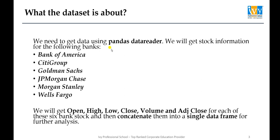Using pandas data reader we will get stock information for six banks: Bank of America, Citigroup, Goldman Sachs, JP Morgan Chase, Morgan Stanley, and Wells Fargo. We will get the open, high, low, close, volume, and adjusted close price for each of these six bank stocks and then concatenate them into a single data frame for further analysis.